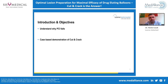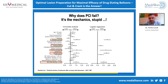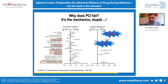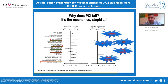This is an old slide which I really like to show, because before we speak about different drugs — whether it's sirolimus or paclitaxel — we have to speak about mechanics. PCI fails when you have a chronic total occlusion, a long lesion, a small diameter, or in-stent stenosis. Besides diabetes, all the factors are mechanical, and this hasn't really changed in the last 20 or more years.